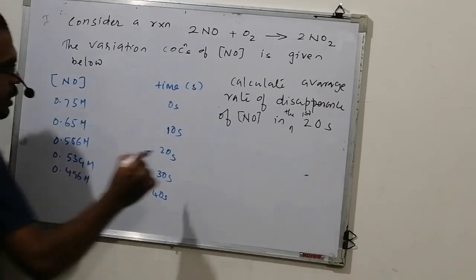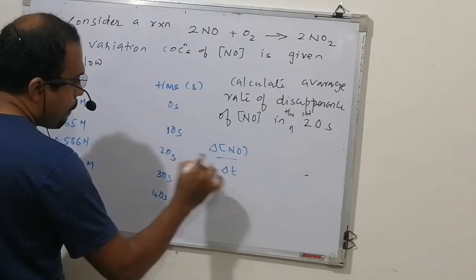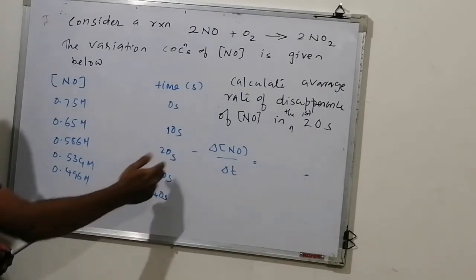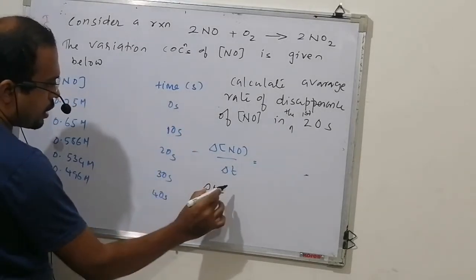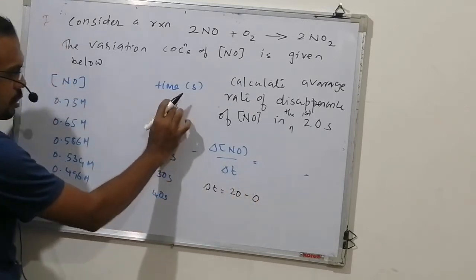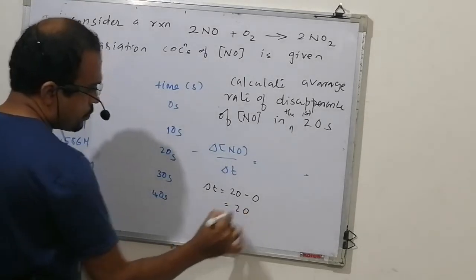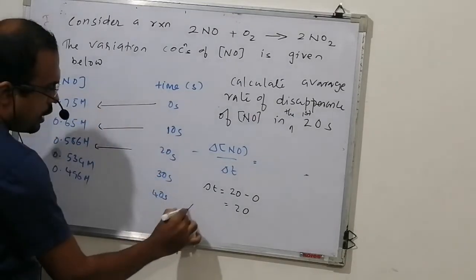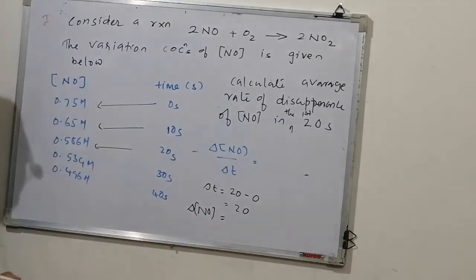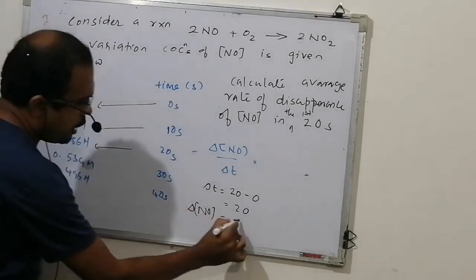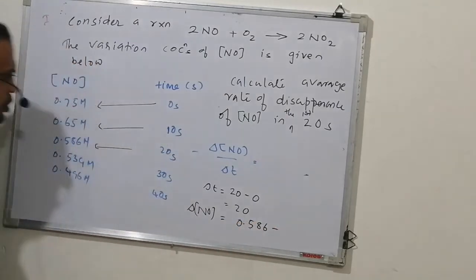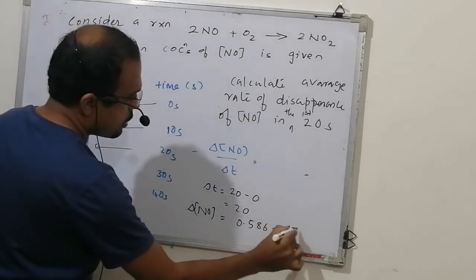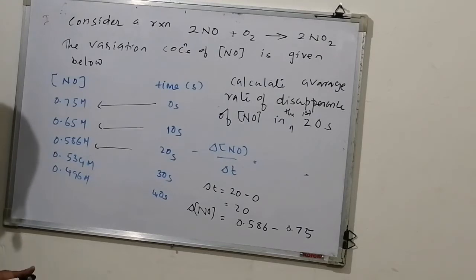Very simple question. What is the average rate? This is the question: what is delta NO by delta T in 20 seconds. The whole time delta T is given, delta T is mentioned, first 20 seconds, therefore 20 minus 0. You have to begin from here, 0 to 20. That is 20. Now, what is the concentration at 20? This is for 0, this is for 10, this is for 20. Therefore, delta NO is equal to finally 0.58 minus initially, first 20 means from 0 to 20. That is initial 0.75.